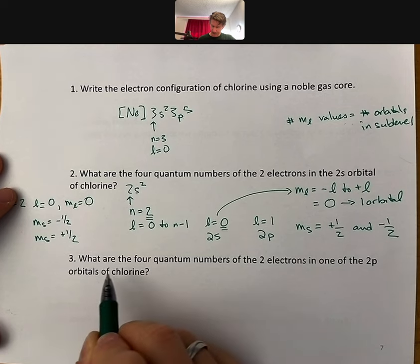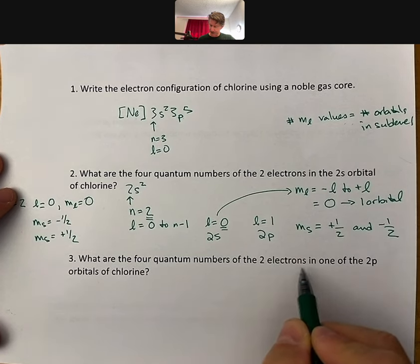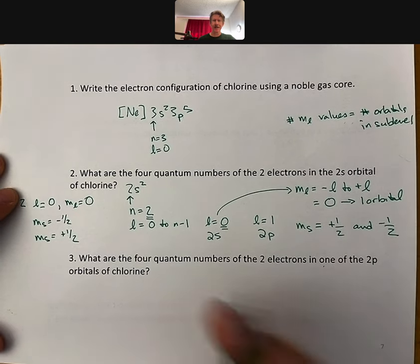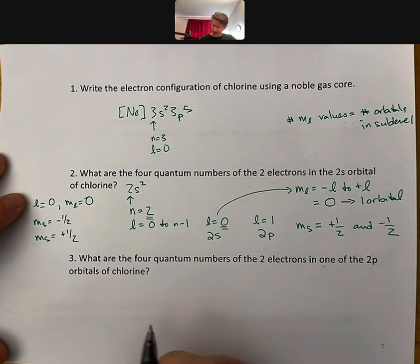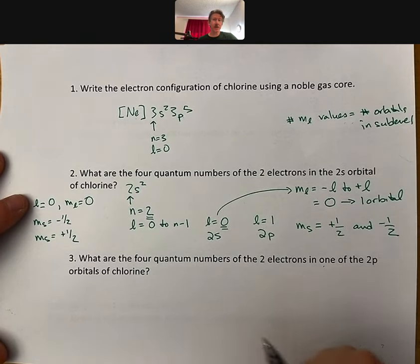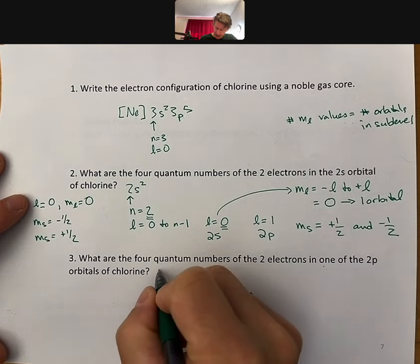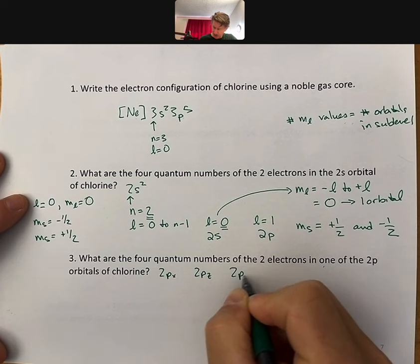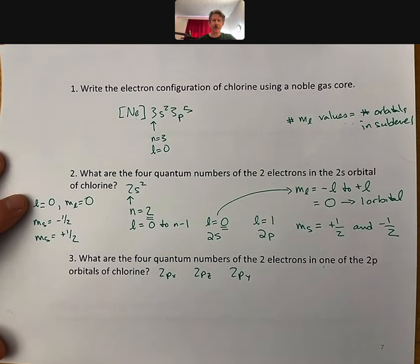Now, what are the four quantum numbers of the two electrons in one of the 2p orbitals of chlorine? Let's do this one as well. So, two electrons in one of the 2p orbitals. We know there's 2px, 2pz, and 2py.